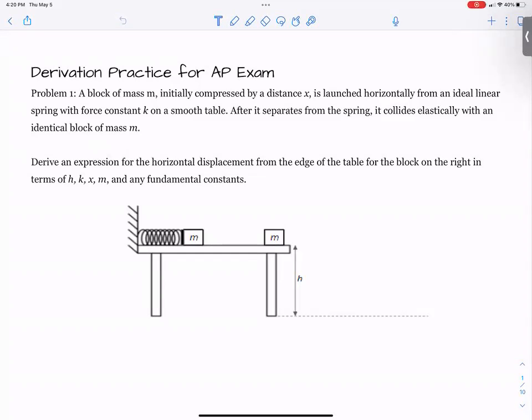A block of mass m initially compressed a distance x is horizontally launched from an ideal linear spring with force constant k on a smooth table. After it separates from the spring, it collides elastically with an identical block of mass m. Derive an expression for the horizontal displacement from the edge of the block on the right in terms of h, k, x, m, and any fundamental constants. So this term here simply relates to g.